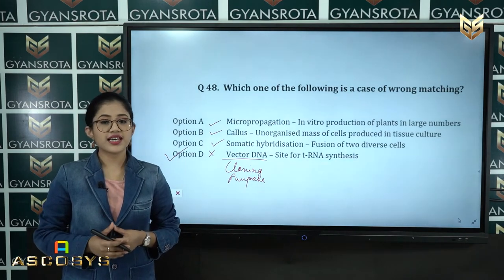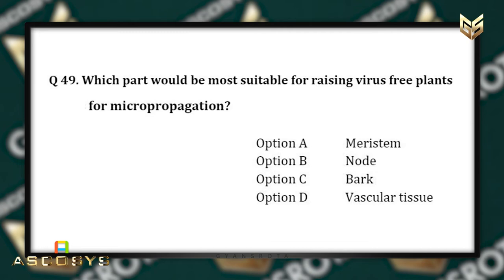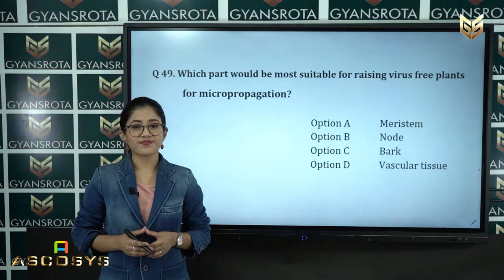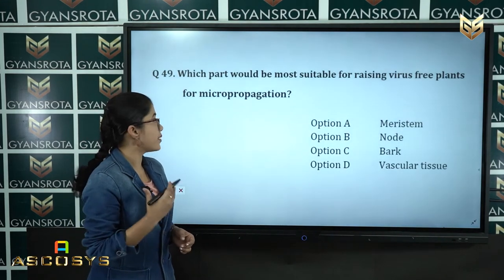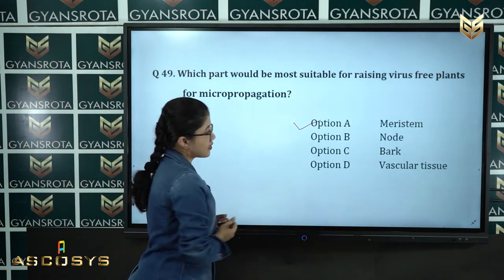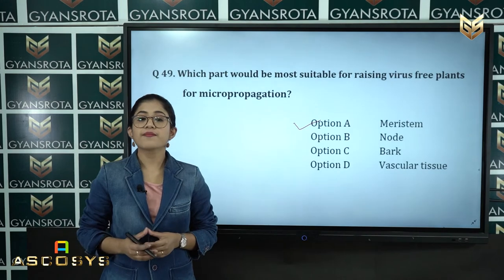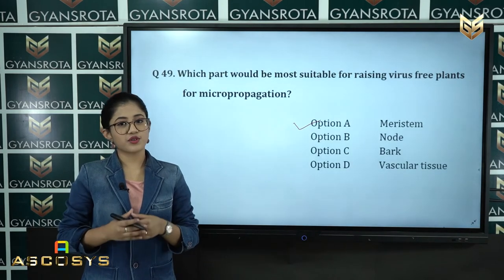Question 49: Which part would be most suitable for raising virus-free plants for micropropagation? Option A: Meristem, option B: Node, option C: Bark, option D: Vascular tissue. The correct answer is option A, Meristem, which is the most suitable part for raising virus-free plants.